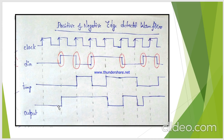Whenever it detects either posedge or negedge, the output becomes high for one clock cycle. Here it has switched to a rising edge from 0 to 1, so the output is becoming high for one clock cycle. Here it detected a falling edge, so the output will become high for the next clock cycle. Like this, it follows.